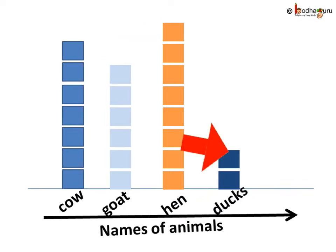The number of ducks has decreased from five last year to two now — maybe the rearing of ducks was not beneficial for him. So the box chart is a very simple way to represent data, and anyone can understand it easily.